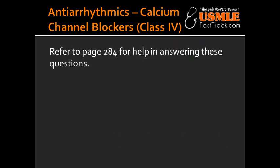What are the class 4 antiarrhythmics? The class 4 antiarrhythmics are the calcium channel blockers. Name some of the calcium channel blockers that can be used as antiarrhythmics. The calcium channel blockers used as antiarrhythmics are verapamil and diltiazem. What is the mechanism of action of the class 4 antiarrhythmics, the calcium channel blockers?